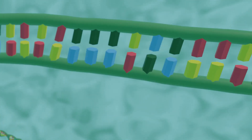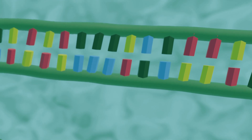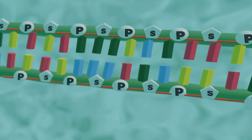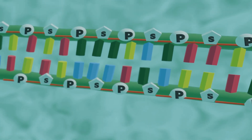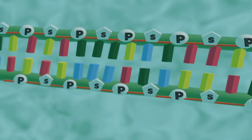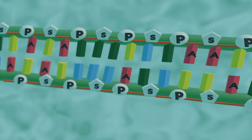Each strand has a backbone made of deoxyribose sugar and phosphate groups. Attached to each sugar is one of four bases: adenine, cytosine, guanine, or thymine. The two strands are connected by chemical bonds between the bases — adenine bonds with thymine, and cytosine bonds with guanine.